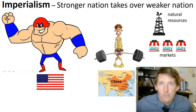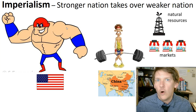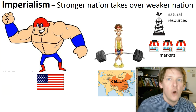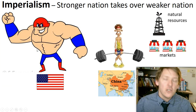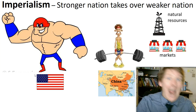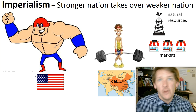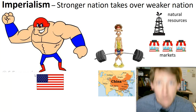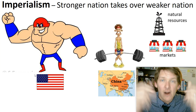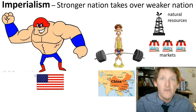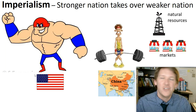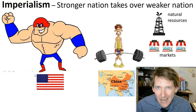Why does imperialism happen? Because the bigger nation wants to steal the resources — oil, coal, gold, rare earth metals — steal them from the weak nation to make the stronger nation stronger. Also to open up markets, because if we can sell goods to America and also to China, we double the amount of goods we sell, double the workers, and double the spending in America. That's why imperialism happened and kind of still happens.